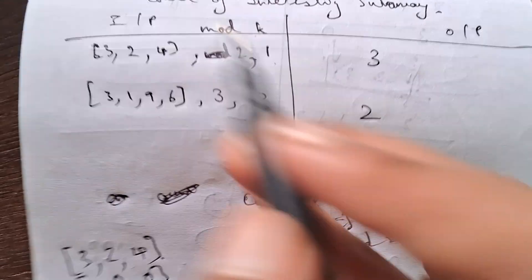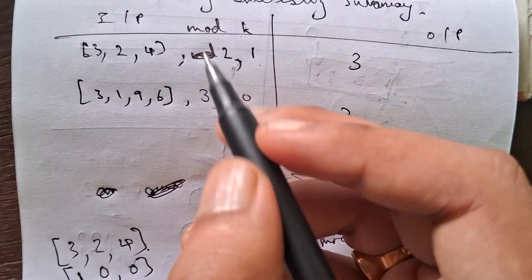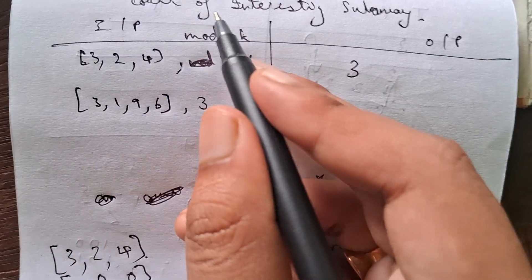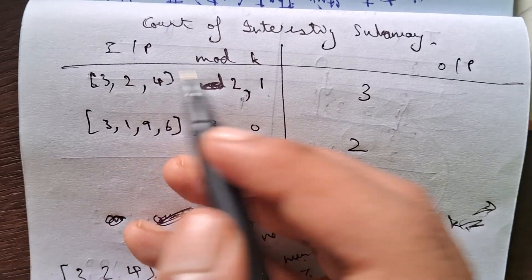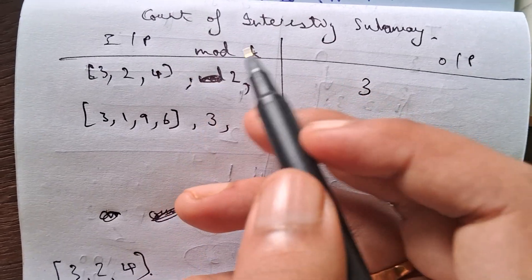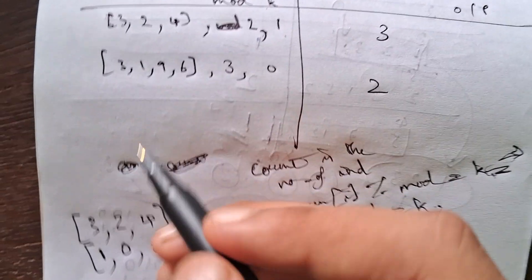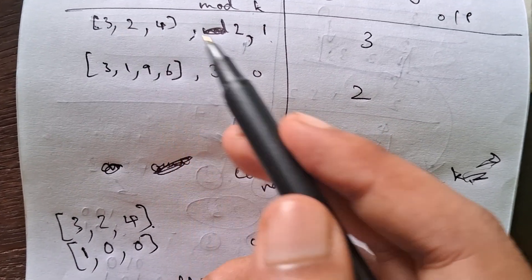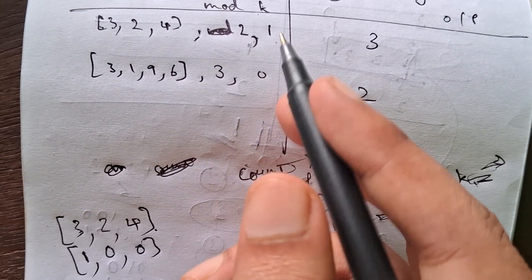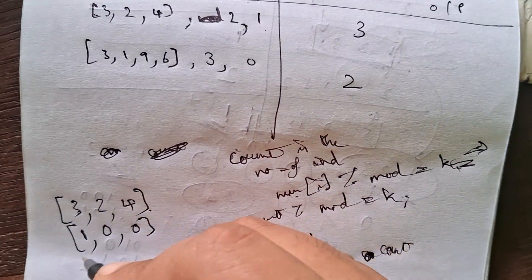What we can do first is convert the original array into a binary array: if nums[i] mod modulo equals k, we rewrite it as 1, otherwise as 0. For example, 3 mod 2 is 1 so we write 1; 2 mod 2 is 0 so we write 0; 4 mod 2 is 0 so we write 0.